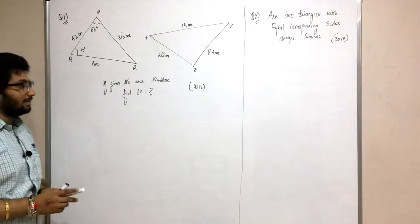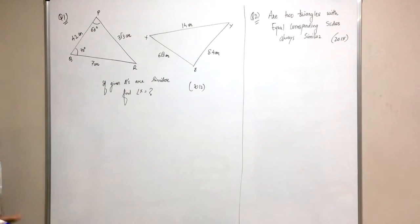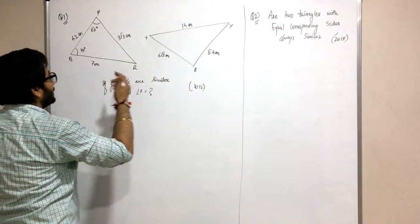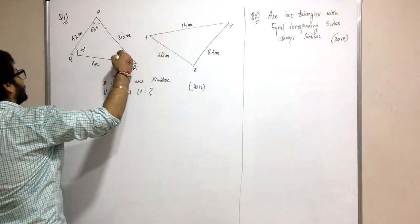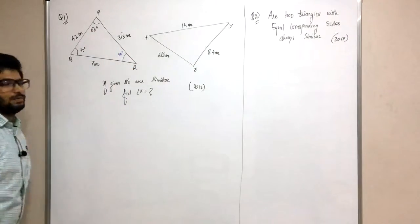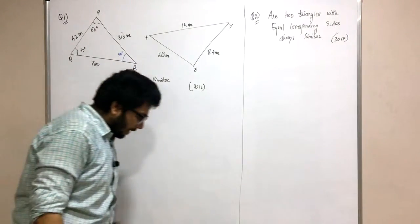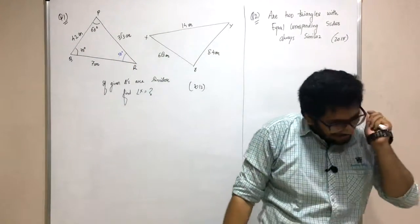The triangles are similar, given already. If the triangles are similar, what's the conclusion? The corresponding angles are equal. We have 70, 60, 50. Now the angles will be equal.